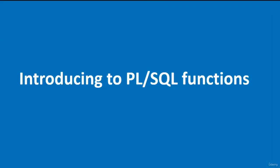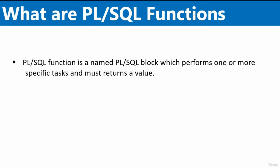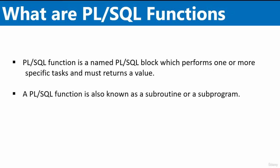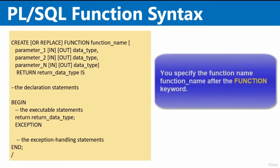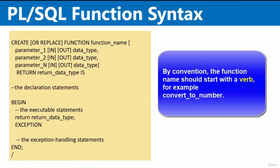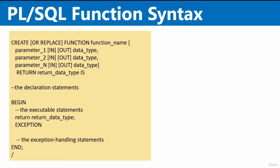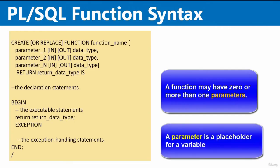PL/SQL functions are named PL/SQL blocks that perform one or more specific tasks and must return a value. A PL/SQL function is also called a subroutine or subprogram. To create a function, use the CREATE FUNCTION syntax. The function name should start with a verb — for example, convert_to_number. A function can have zero or more parameters. When specifying a parameter, you must also specify its data type.